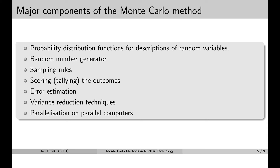Let's review the major components of the Monte Carlo method. First of all, we will have to sample values for a large number of random variables — such as the distance between two neutron collisions, or the reaction type, and many other random variables. In order to be able to sample values for these random variables, we need to have a good description of the random variables, and we can have that description in the form of probability distribution functions. We are going to learn about these functions in the next lesson.